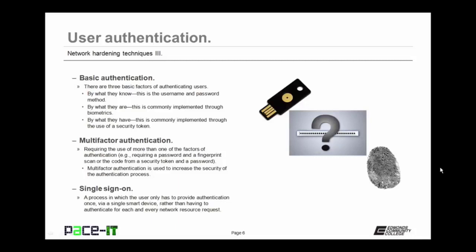You can combine these in a process called multi-factor authentication — requiring the use of more than one of the factors of authentication, such as requiring a password and a fingerprint scan, or the code from a security token and a password. Multi-factor authentication is used to increase the security of the authentication process. You might also implement a single sign-on process — where the user only has to provide authentication once via a single smart device, rather than having to authenticate for each and every network resource that they request.